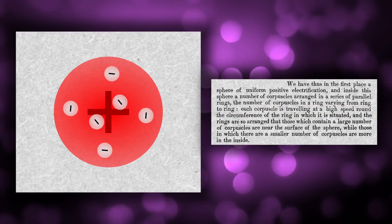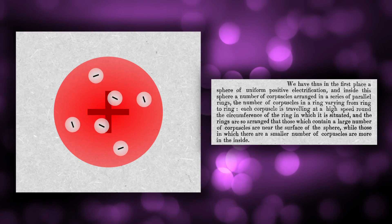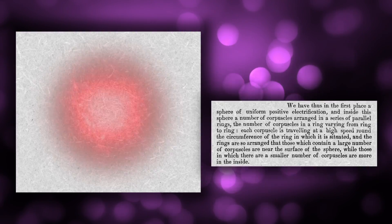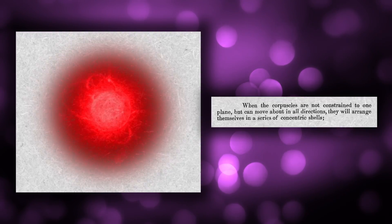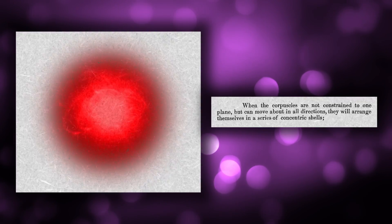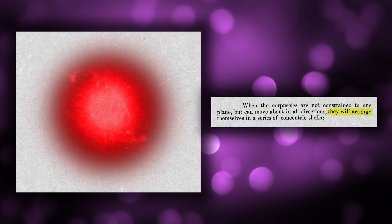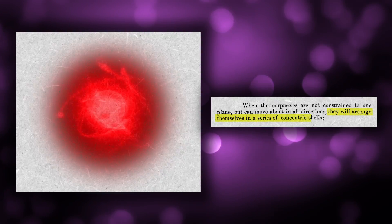Later, he even describes how, rather than two-dimensional rings, the electrons could move in three-dimensional shells, saying, when the corpuscles are not constrained to one plane but can move about in all directions, they will arrange themselves in a series of concentric shells.